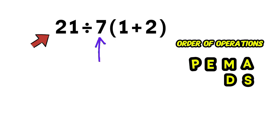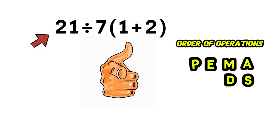And remember, when a number is placed right next to parentheses, that means multiplication even if the multiplication sign isn't written. So let's follow the order step by step.